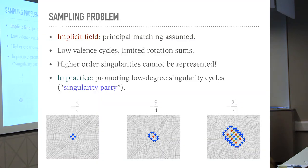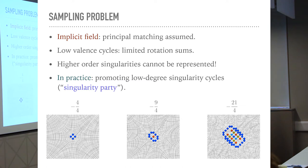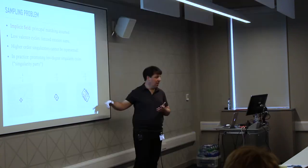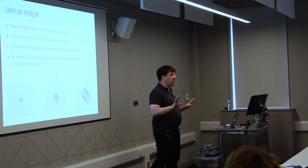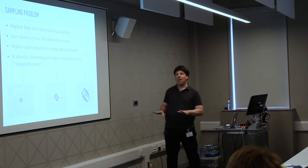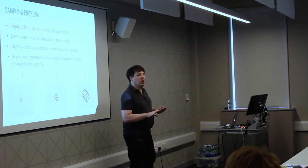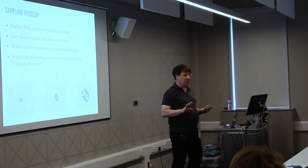What's the problem with principal matching? I kept putting it up as a nice option: you have two vectors close by, why not use the smallest angle? The answer is sampling. If I have a field that naturally has a high-order singularity and I just give someone the field and say 'compute the principal matchings everywhere and show me the singularities,' this is what you get — a singularity party. With too few triangles around a cycle, the amount of rotation you can encode is low.